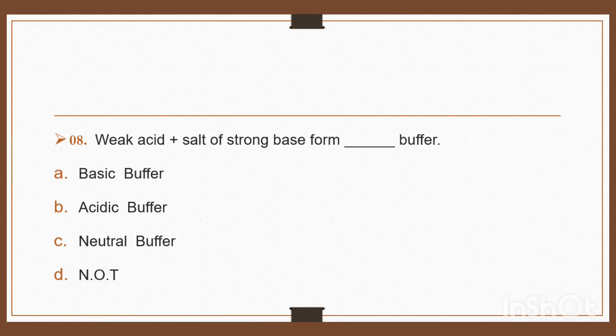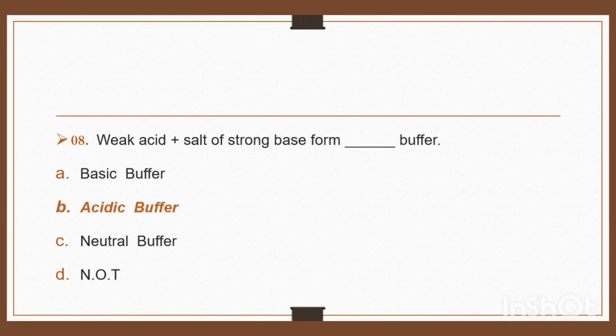Question 8: Weak acid plus salt of strong base form dash buffer — option A: basic buffer, option B: acidic buffer, option C: neutral buffer, option D: none of these. Weak acid plus salt of strong base form acidic buffer. Right, option B: acidic buffer.